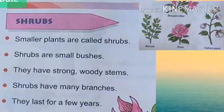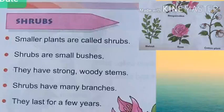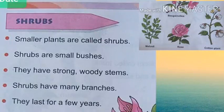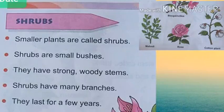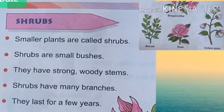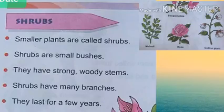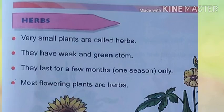Number two: Shrubs. Smaller plants are called shrubs. Shrubs are small bushes. They have a strong woody stem. Shrubs have many branches and they last for a few years.